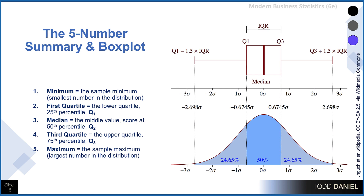The box plot is the graphical representation of the five-number summary. Those five numbers are: the minimum (smallest number in the distribution), the first quartile (25th percentile), the median (50th percentile, also called quartile 2), the third quartile (75th percentile), and the maximum. The interquartile range is the difference between Q1 and Q3. The box plot also shows the same kind of information we would see with a normal curve with standard deviations applied.